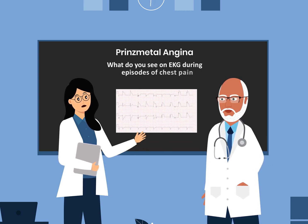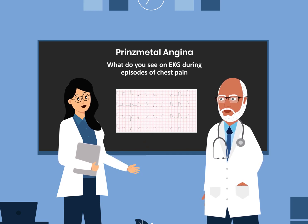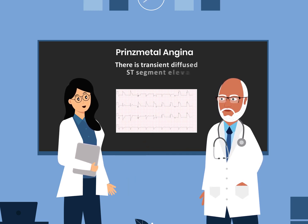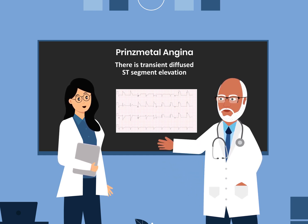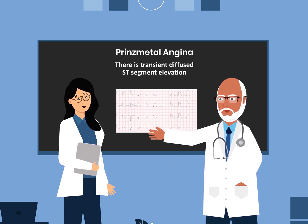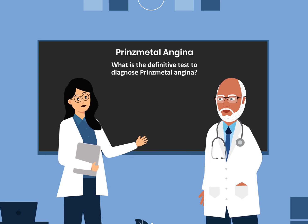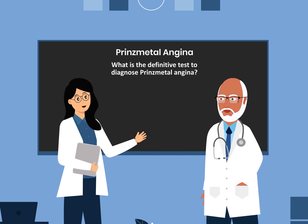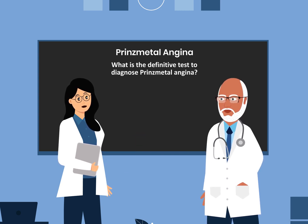What do you see on EKG during episodes of chest pain? There is transient diffuse ST segment elevation. What is the definitive test to diagnose Prinzmetal angina?